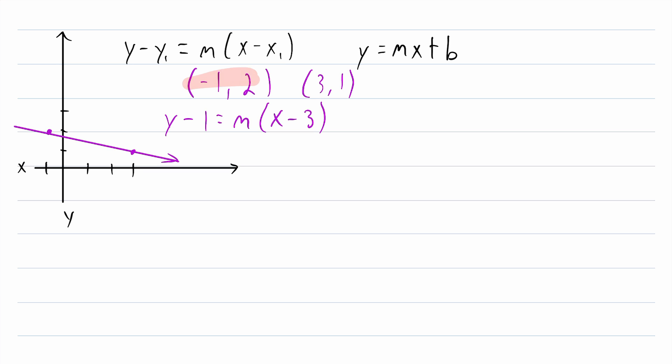The vertical change from this point to this point is the change in y-value. So in this case, that's 1 minus 2, that is the change in y-value, which goes in the numerator. Then in the denominator, we have the change in x-value, the change in horizontal distance, which is 3 minus negative 1. So that is the denominator, 3 minus negative 1.